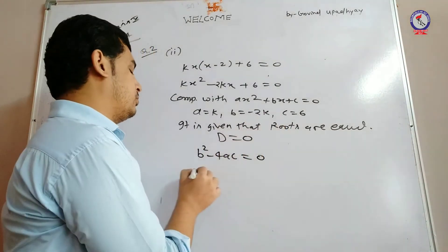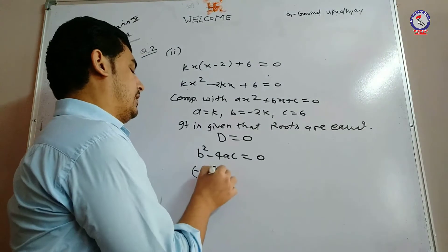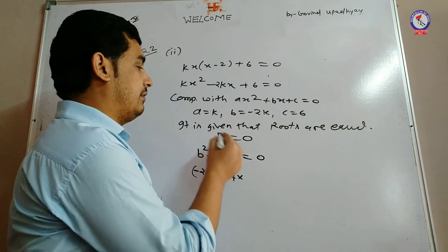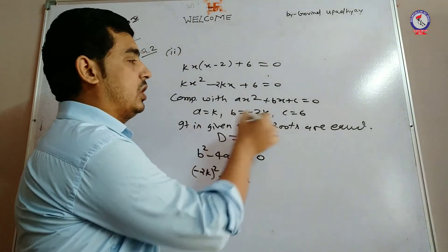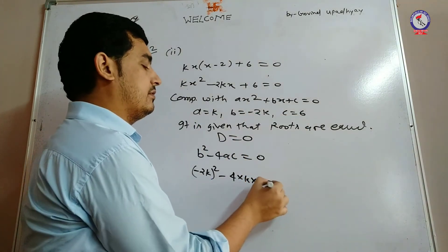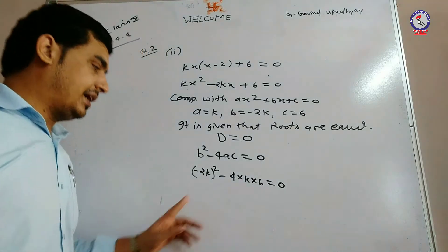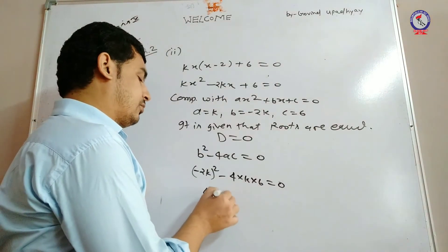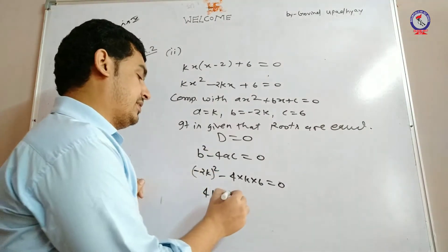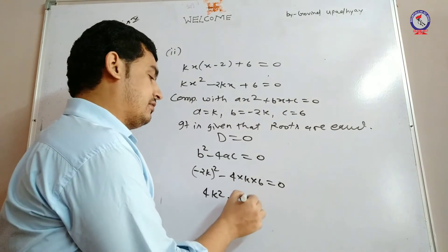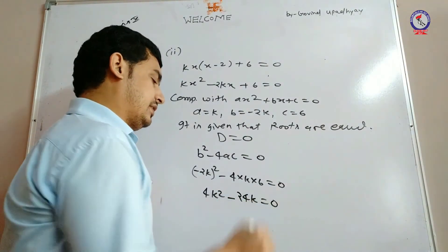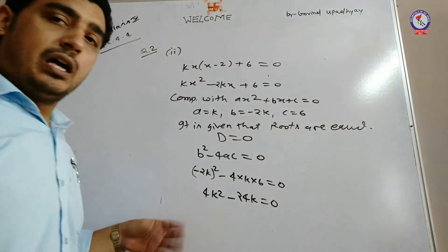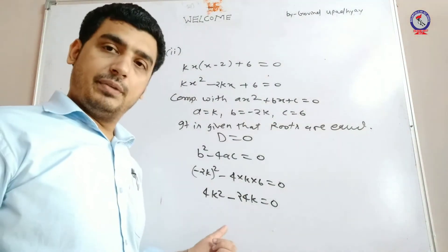b squared मतलब minus 2k का square, minus 4 into a की value k, into c की value 6, is equal to zero. Square करने पर यहाँ होगा 4k squared, minus से minus plus हो जाएगा क्योंकि even power है, minus 24k is equal to zero. अब यह हमारे पास वापस quadratic equation है।